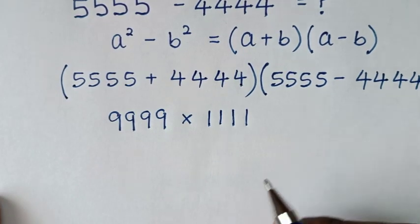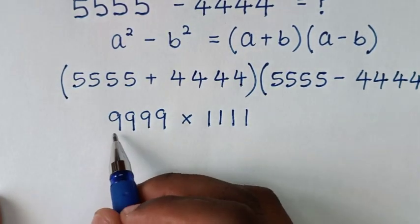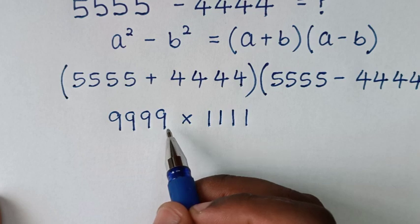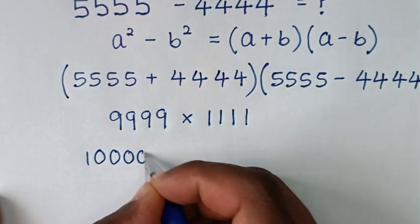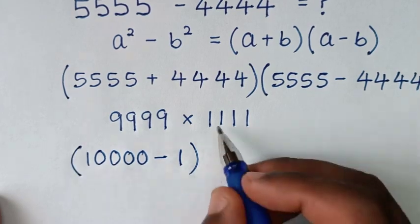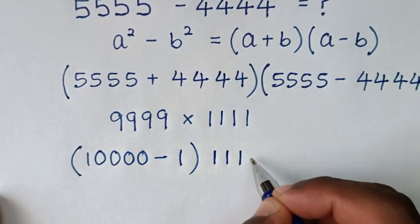Then in the next step, to easily multiply, 9999 is the same as 10,000 minus 1, then times 1111.